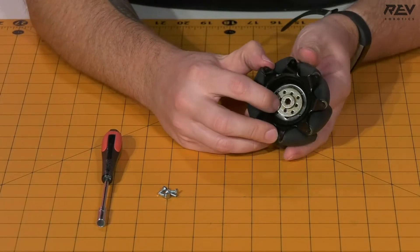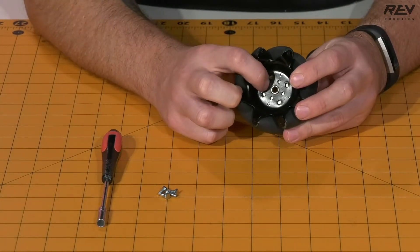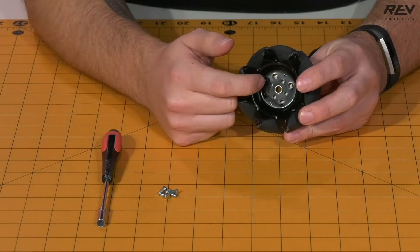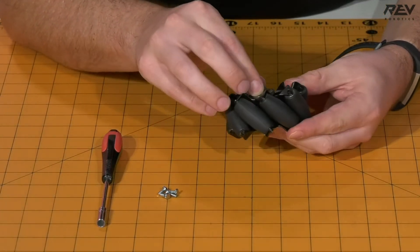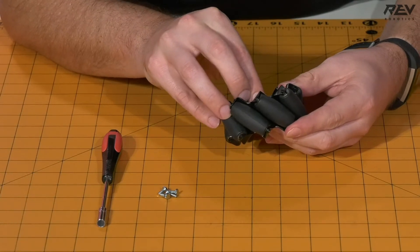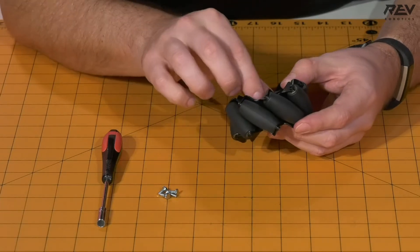Now you're going to want to align the holes on the hex adapter with the hole pattern of the wheel itself so that we're able to screw in the hex cap screws. So we're going to take some time here to get those aligned with the correct pattern.